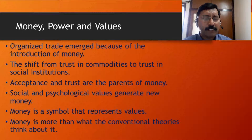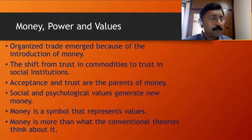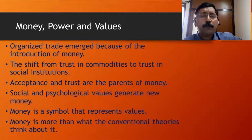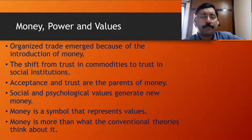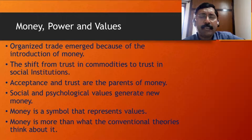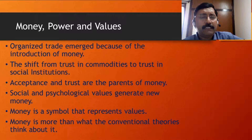Social and psychological values generate new money. When the commodity value was bound to physical objects such as gold, the amount of money generated was limited by the physical objects. When the society began to trust the man, his capacity, knowledge, skills, and integrity, the money generation multiplied.